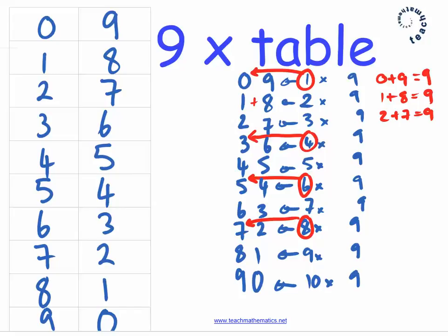And then you'll also notice I've circled 1 times 9, the 1, and put an arrow to the 0. So if I want to work out 1 times 9, actually what I can do is just take 1 off this number.